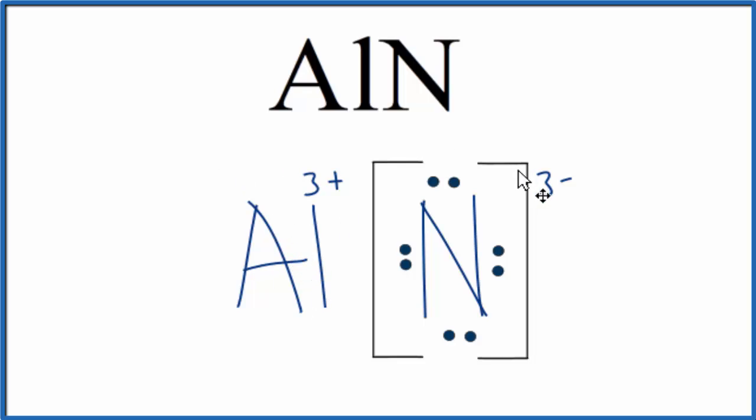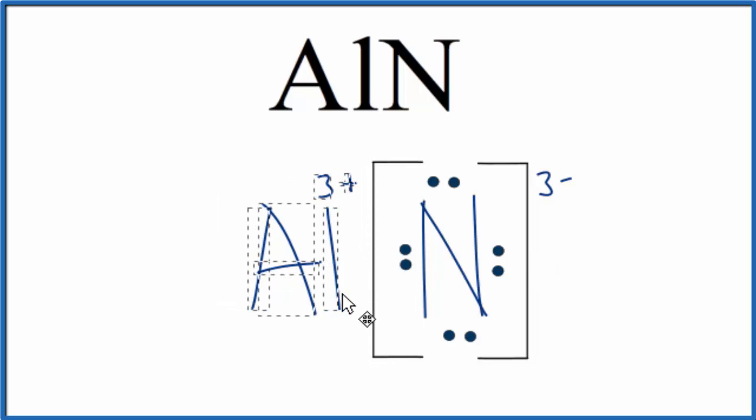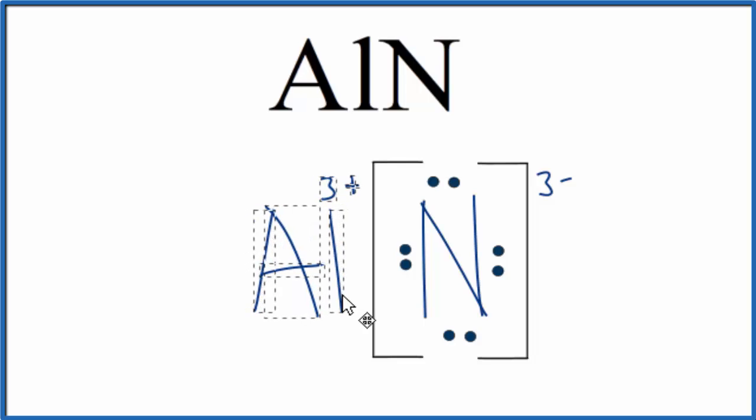So this is the Lewis structure for aluminum nitride. We have this positive aluminum ion here, and then the nitride ion, and the positive and negative are attracted. That's what forms our ionic bond. If you had solid AlN, aluminum nitride, you'd have a crystal of these repeating formula units. But this is useful to show us how the electrons are transferred from the aluminum to the nitrogen to give us AlN.